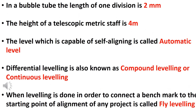The length of one division is 2 mm. The height of a telescopic staff is 4 meters. The level which is capable of self-aligning is called an automatic level, also known as a self-aligning level.